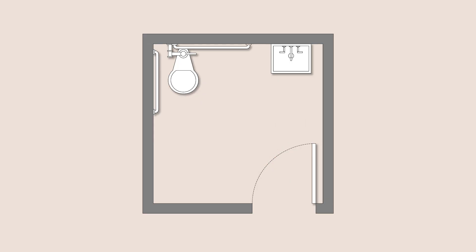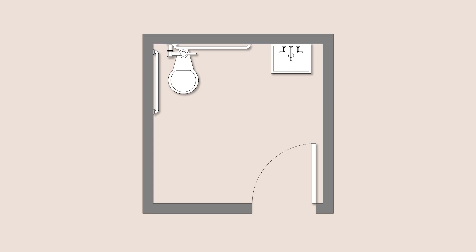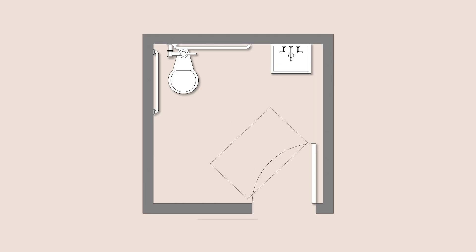Another type of clearance you may see and need to account for is the 30-inch by 48-inch rectangle, which is meant to show the size needed for a wheelchair in a stagnant position. Although if you have a 60-inch clear turning space, you can assume that this 30 by 48 rectangle is also possible. This rectangle, however, must not intersect with the door swing to prevent the door from hitting the person or their wheelchair.